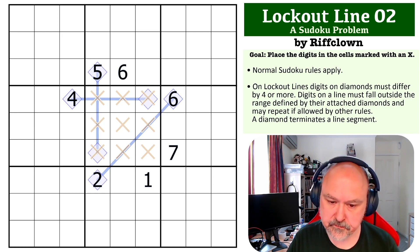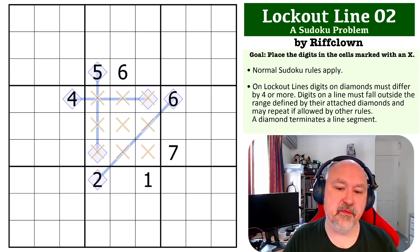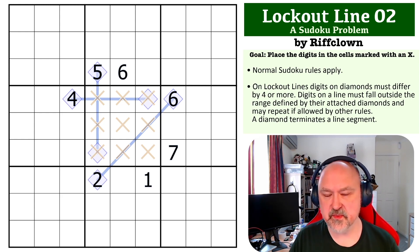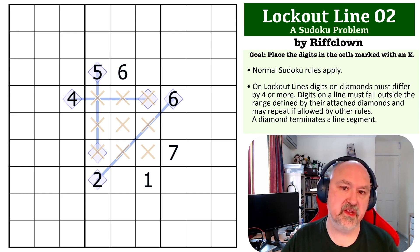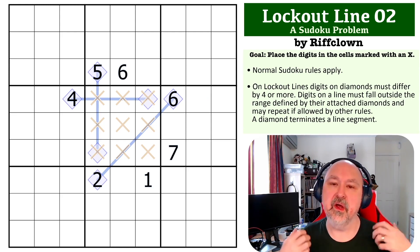The way lockout lines work is a little bit tricky if you've never seen them before. The digits on the diamonds on the lockout lines must be at least four apart, and digits placed between the diamonds on the lines must be outside the bounds of the digits in the diamonds.